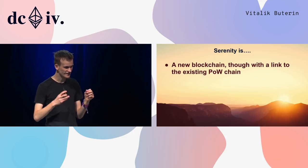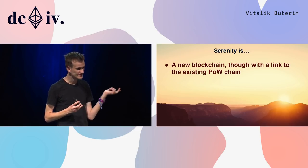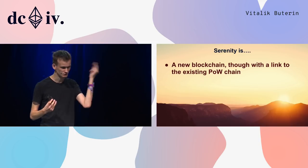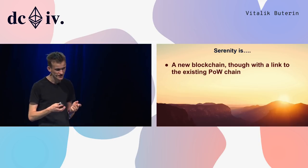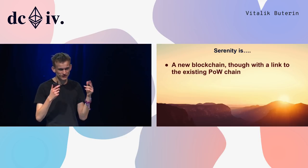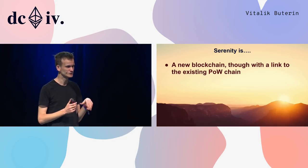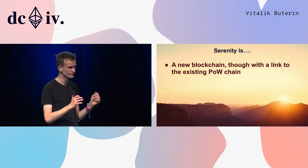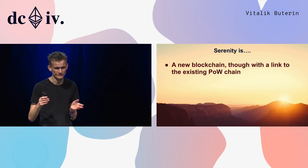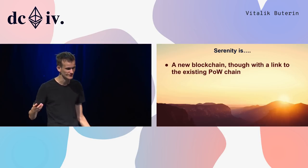Serenity is a new blockchain in the sense of being a new data structure, but it has a link to the existing proof of work chain. The proof of stake chain would be aware of the block hashes of the proof of work chain, and you'd be able to move ether from the proof of work chain into the proof of stake chain. The long-term goal is that once this system is stable enough, all applications on the existing blockchain could be folded into a contract on one shard of the new system — an EVM interpreter written in EWASM.